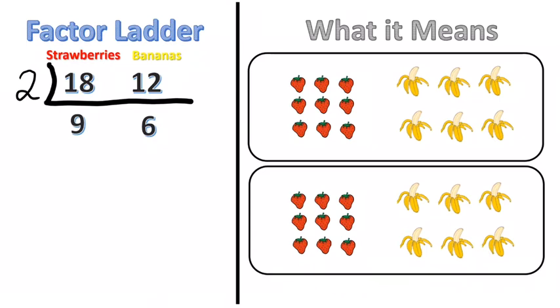Now 9 and 6, I have to look at those two numbers and ask myself are these both divisible by something? Do they have a common factor? And they do. 9 and 6 are both divisible by 3. So if I divide 9 by 3, 9 divided by 3 is 3 and 6 divided by 3 is 2.